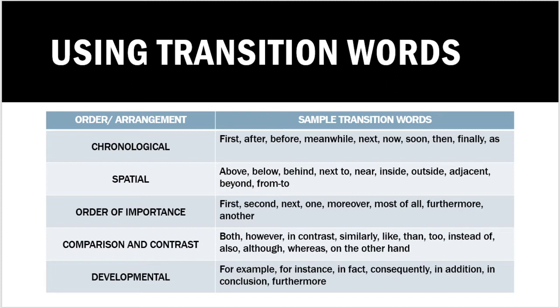For comparison and contrast, looking at similarities and differences, you can use: both, however, in contrast, similarly, like, than, instead of, also, although, whereas, and on the other hand. For developmental order, you can have: for example, for instance, in fact, consequently, in addition, in conclusion, and furthermore. Mind you, these are only samples — you can find other words. These are simply the most common transition words based on the arrangement you want to select for your text.